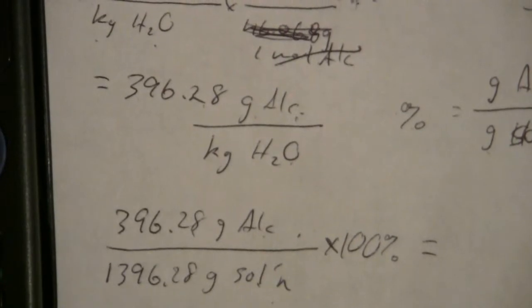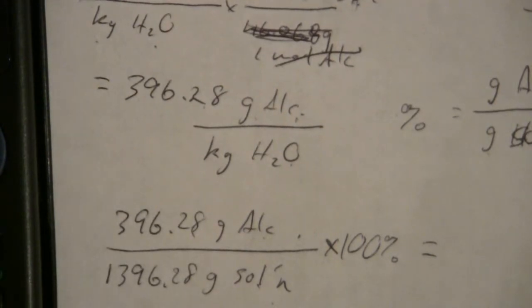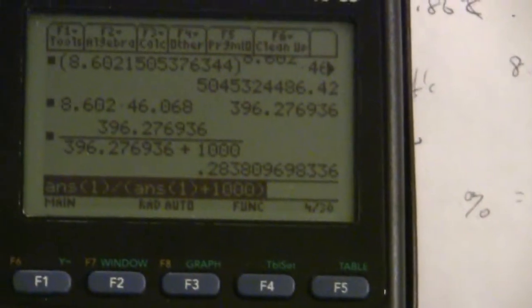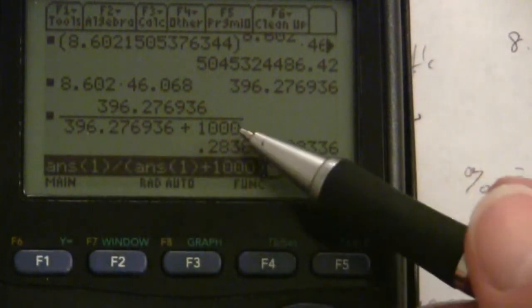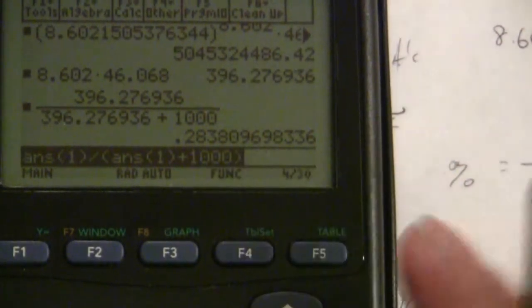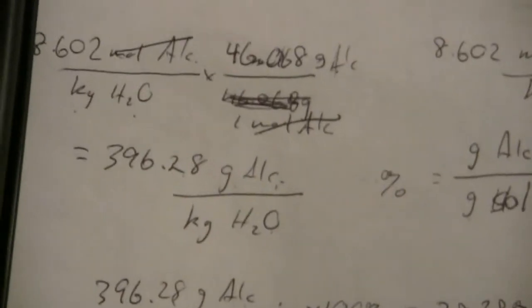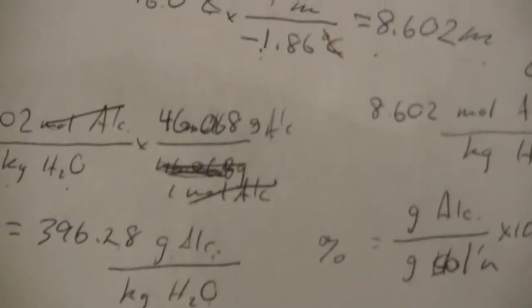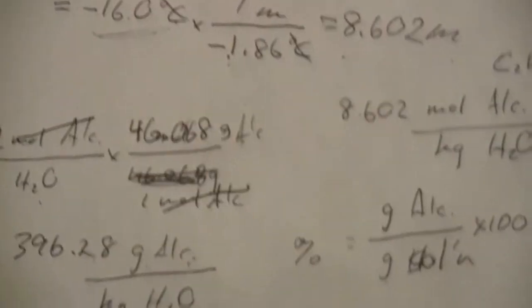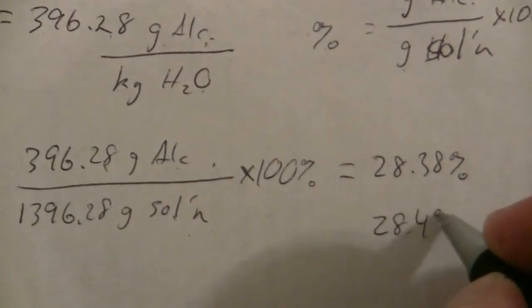And what I end up with is, let's see if I can do this here, divided by the... So what I have is 396 over 396 plus 1,000, and then I multiply by 100, and that will be 28.38%. And I would reference my initial value for the significant figures there, because that's going to be the least, and that would be 28.4%.